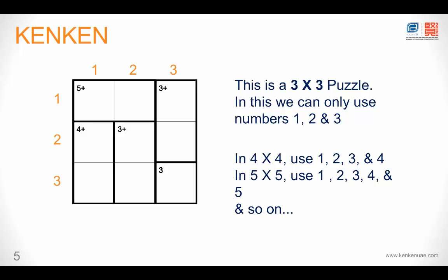5x5, we can use the numbers 1, 2, 3, 4 and 5. So on and so forth. Now in a KenKen Puzzle, you cannot use 0. There is no place for a 0. You can't use negative numbers. You can't use fractions or decimals. You can only use whole numbers.